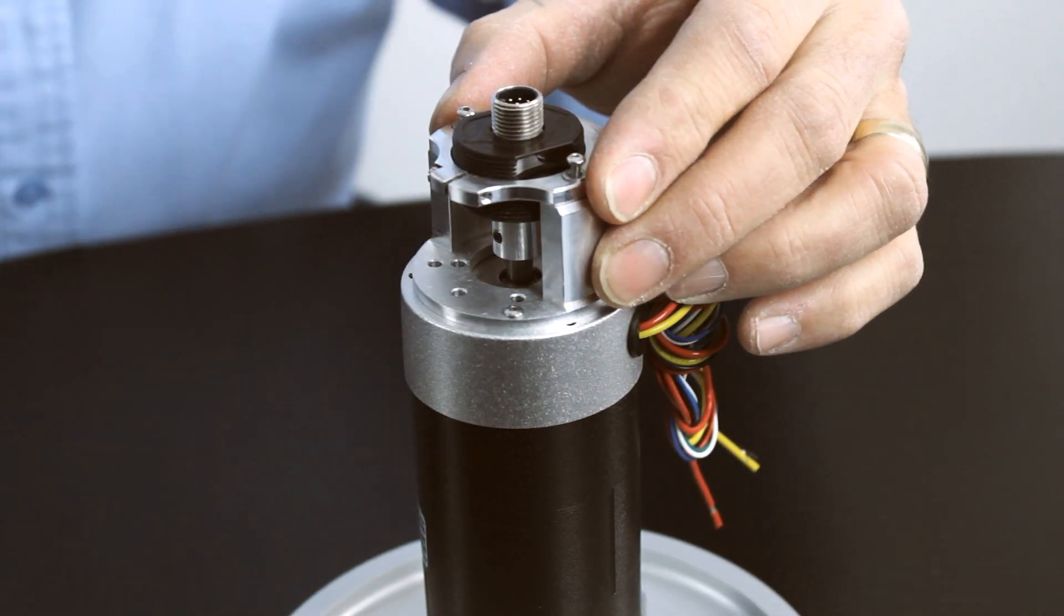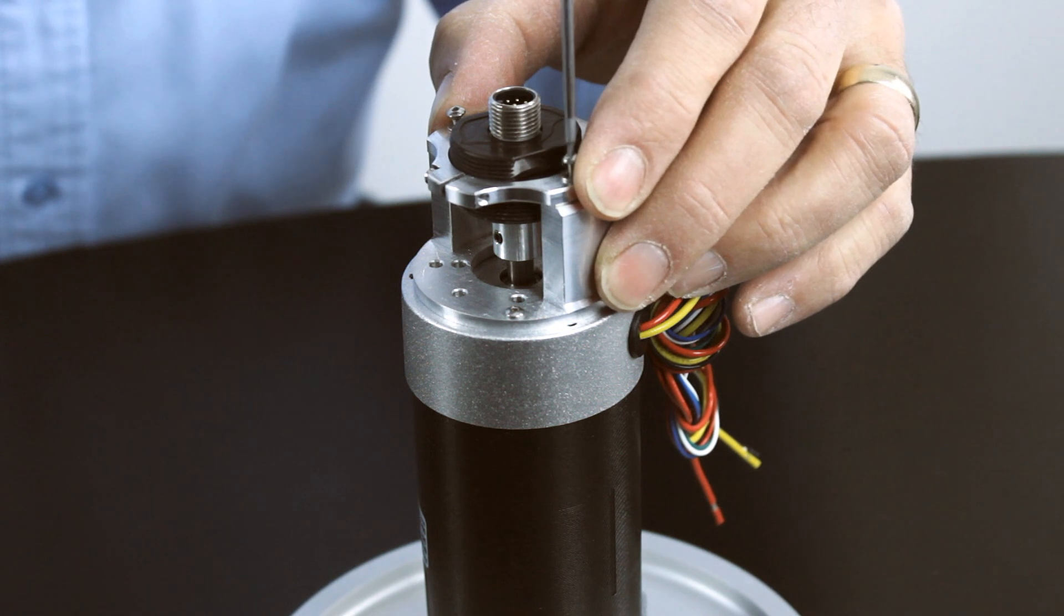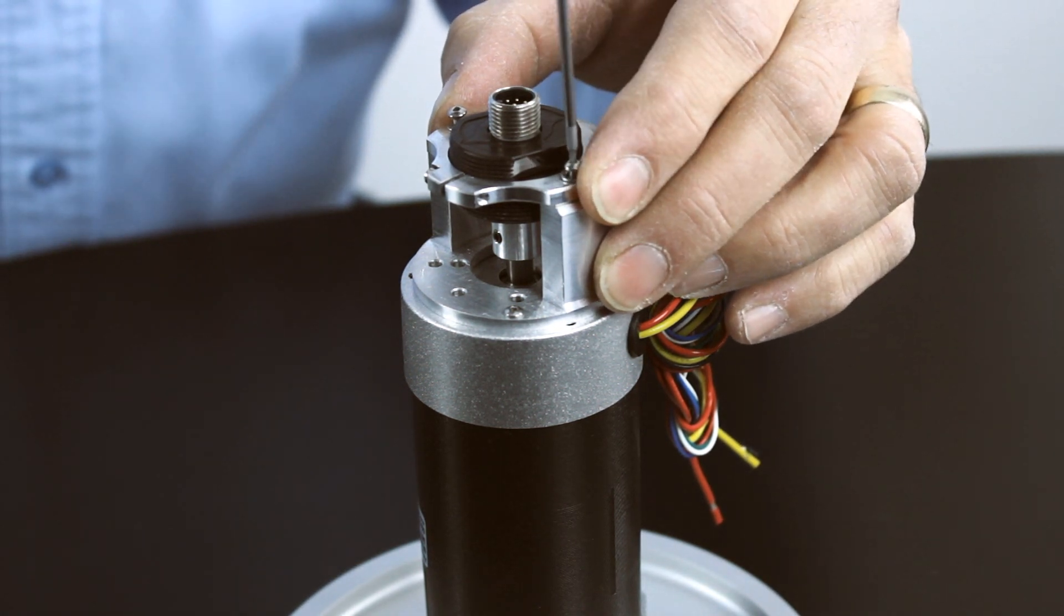Place the threaded adapter plate with the encoder on the motor adapter, leaving the screws slightly loose.